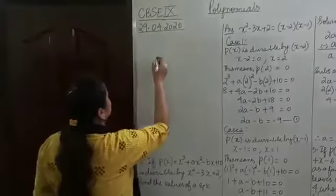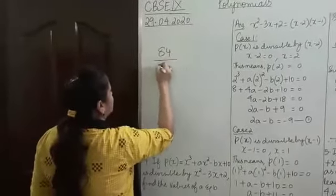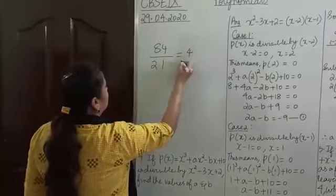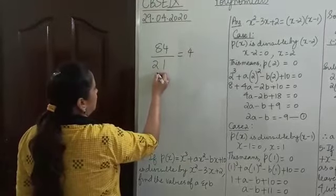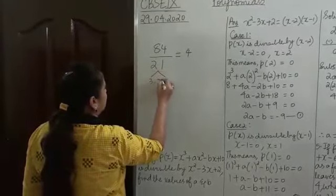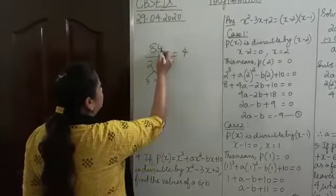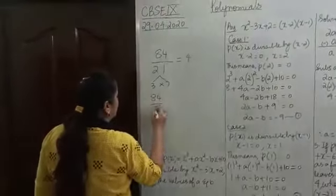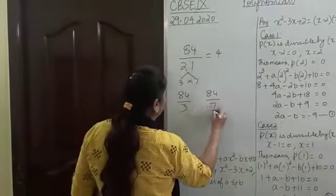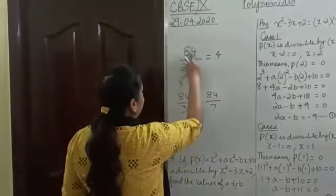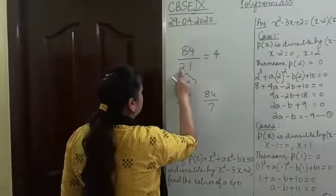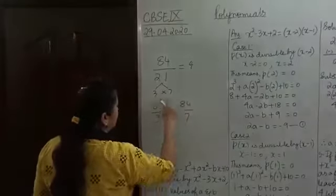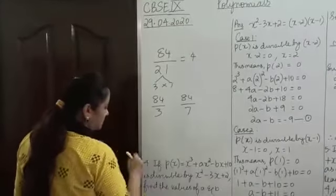Consider this: is 84 divisible by 21? Yes, 84 divided by 21 is 4. Now, 21 can be written as 3 into 7. If 84 is divisible by 21, it also means that 84 is divisible by 3 and 84 is divisible by 7 — that is, divisible by the prime factors 3 and 7.